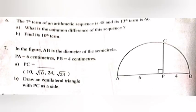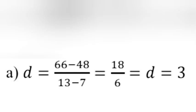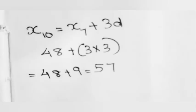Question 6: The 7th term of an arithmetic sequence is 48 and its 13th term is 66. Part A: What is the common difference? Part B: Find its 10th term. Answer A: Common difference D equals (66 minus 48) divided by (13 minus 7) equals 18/6, that is, D equals 3. Answer B: X₁₀ equals X₇ plus 3D: 48 plus 9 equals 57.